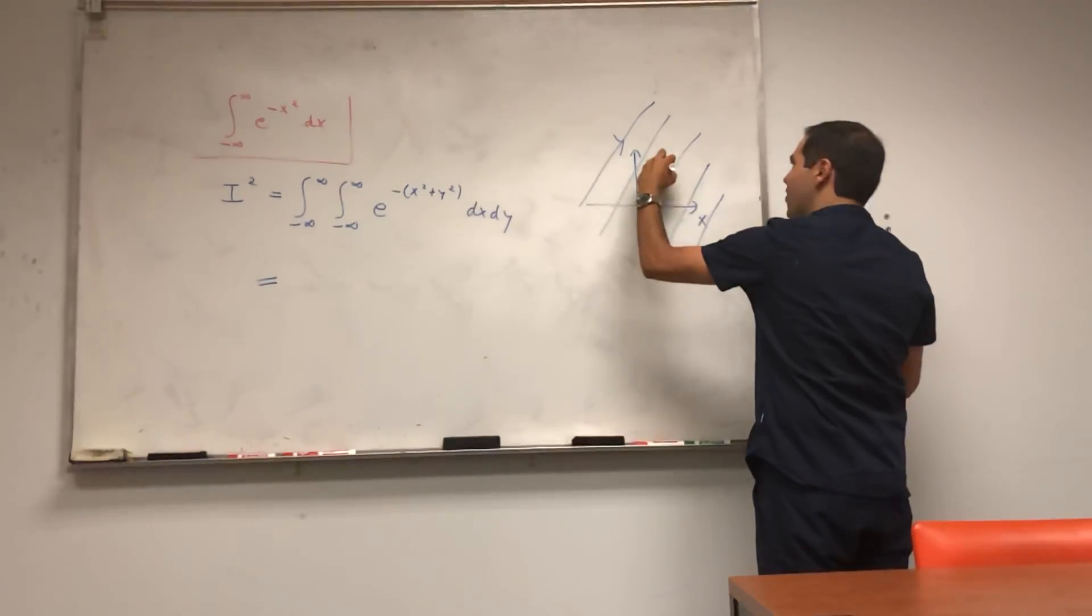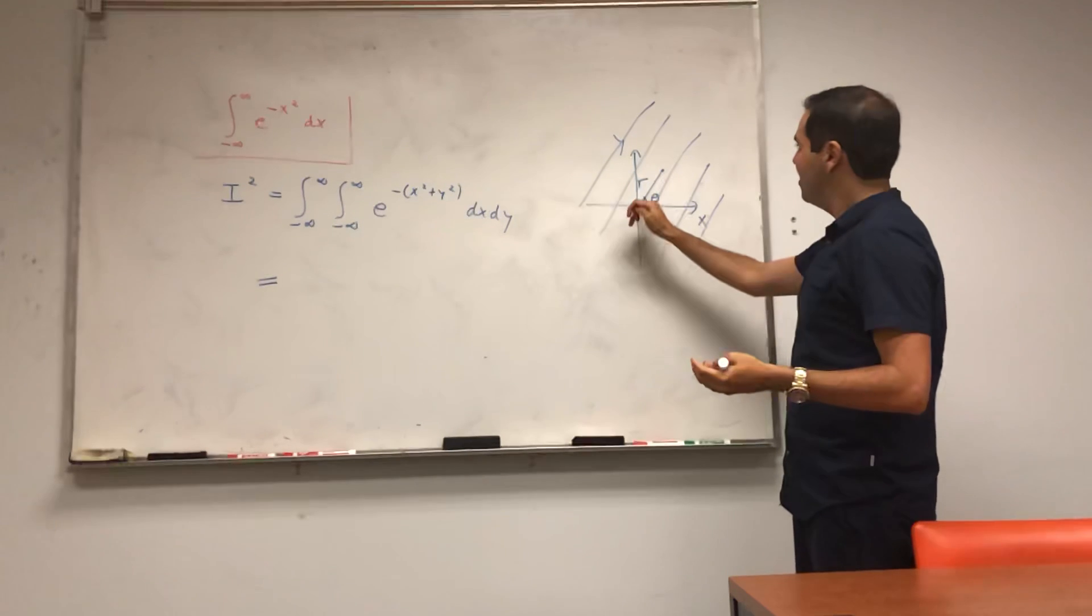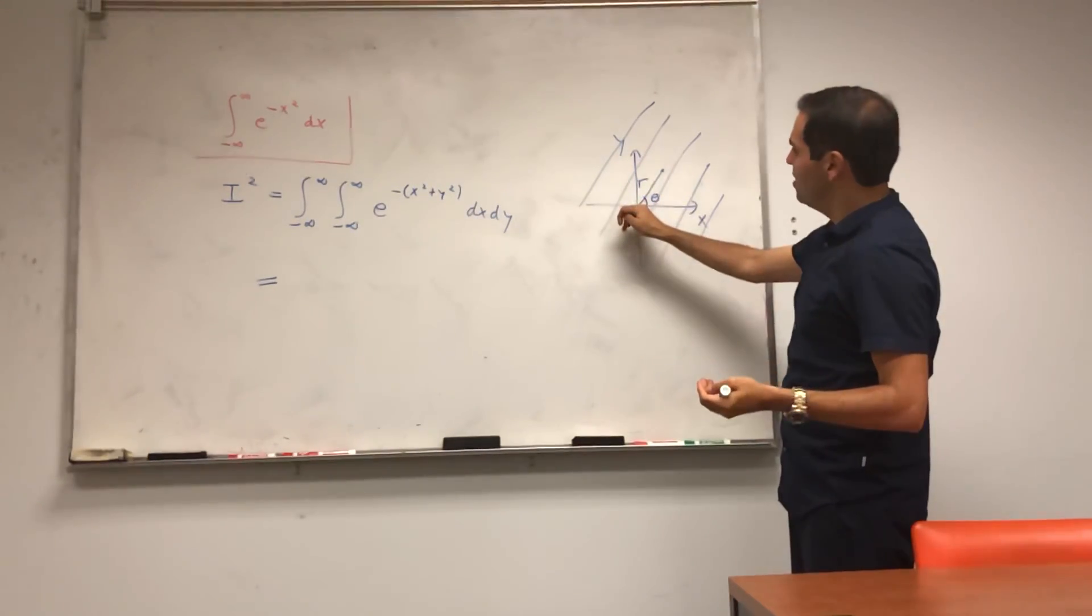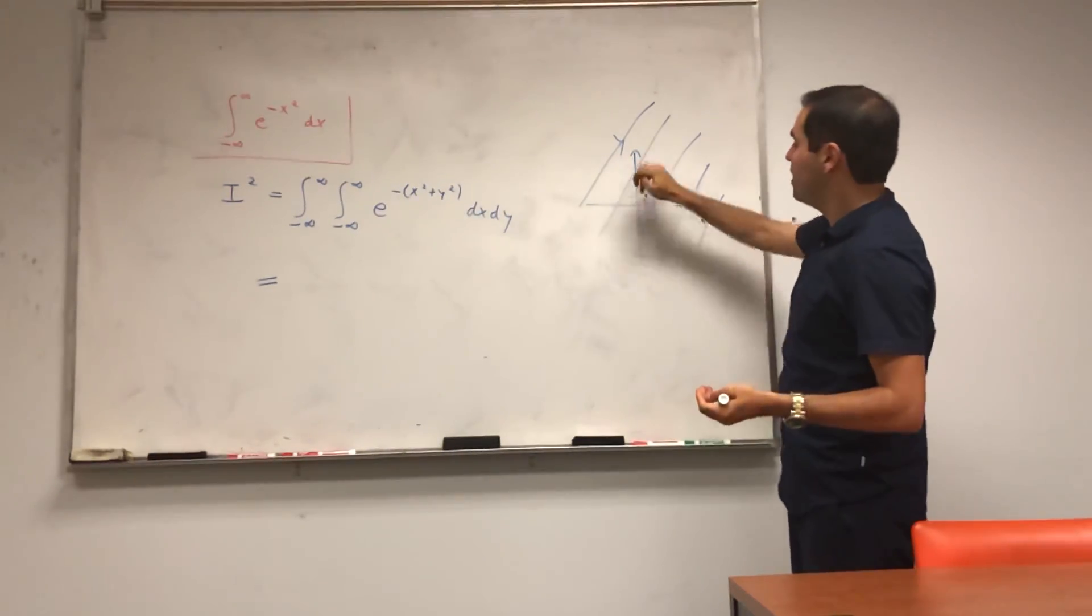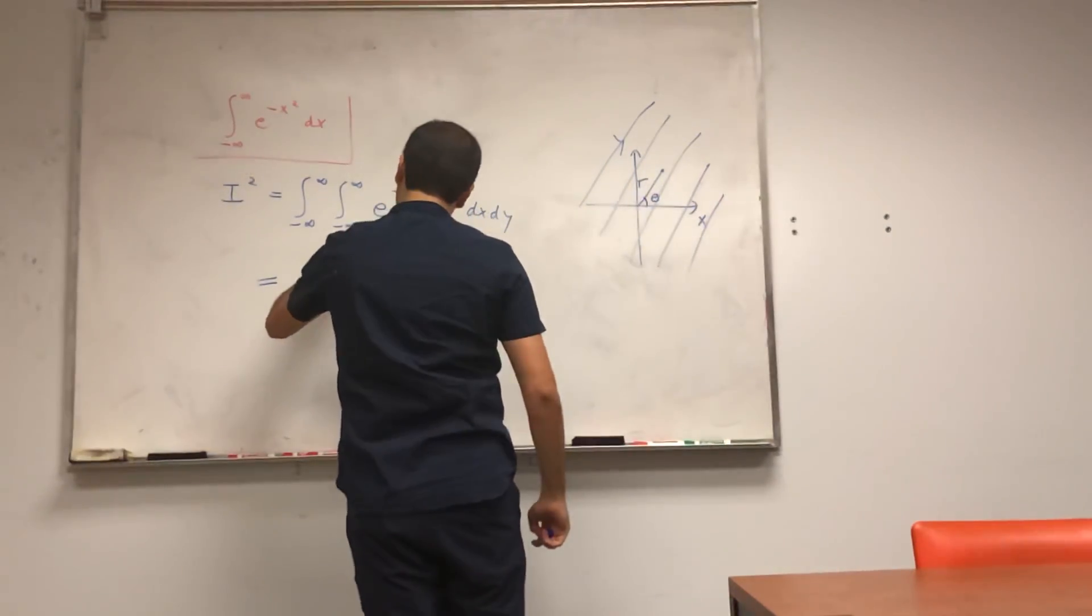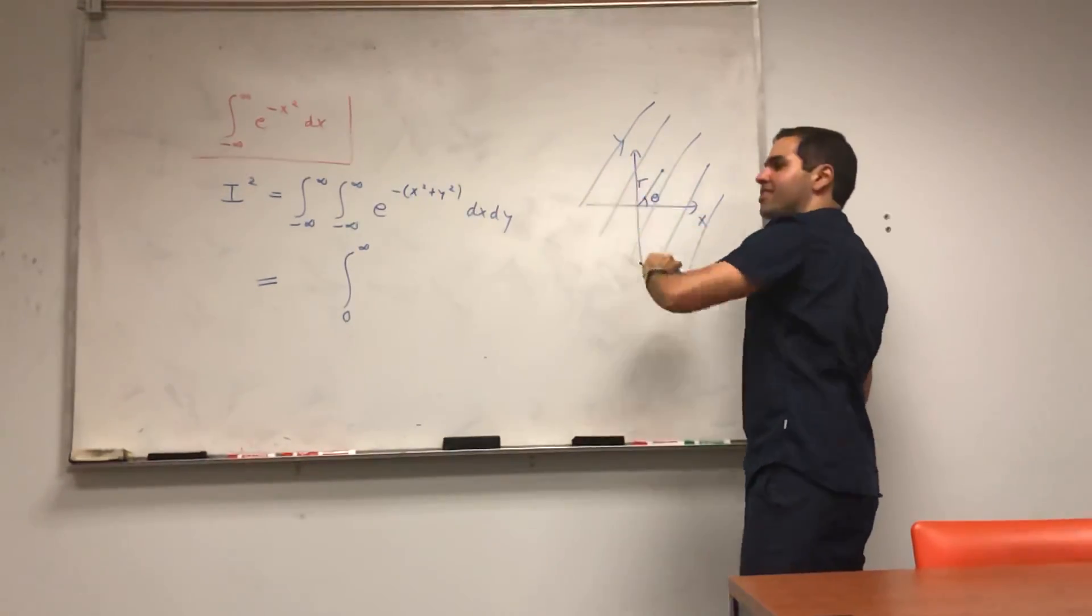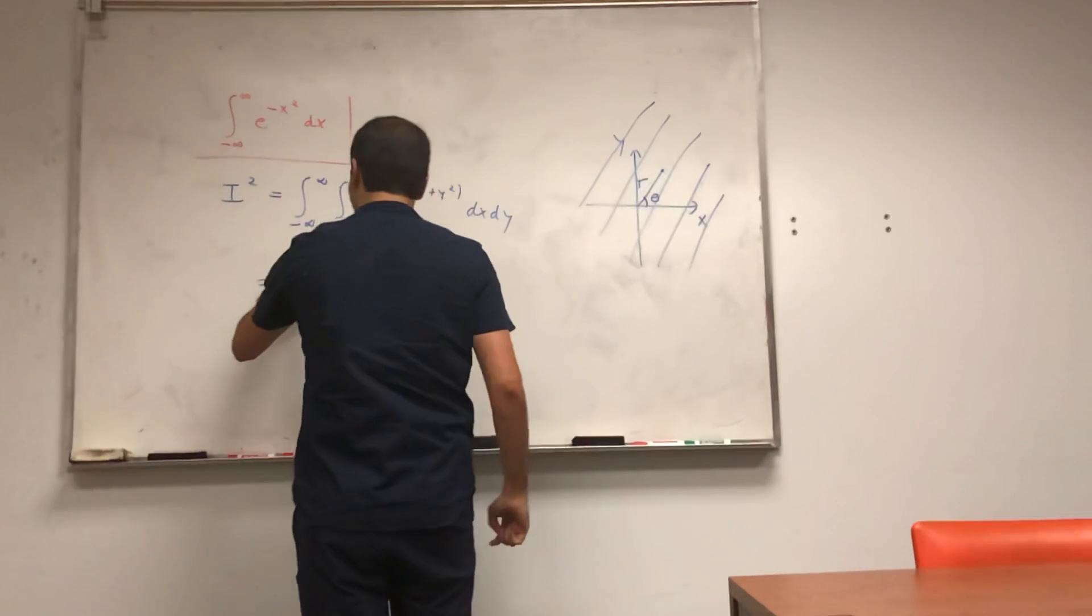What we want to do is convert them into radii and angles. And in this case, notice that r itself goes from 0 to ∞. And the angle θ, it just circles around once, so it goes from 0 to 2π.